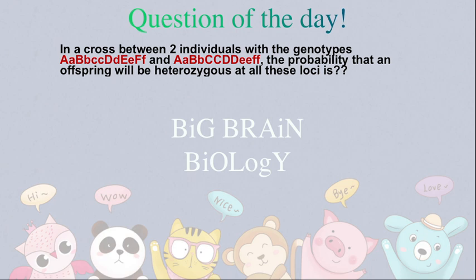The probability that an offspring will be heterozygous at all these loci is 0, 1 by 16, 1 by 32, or 1 by 64.